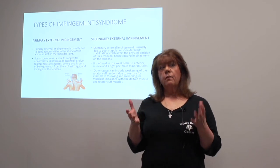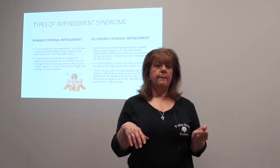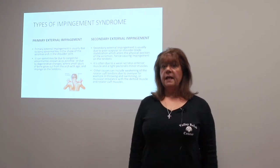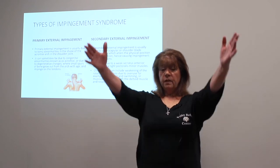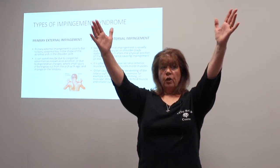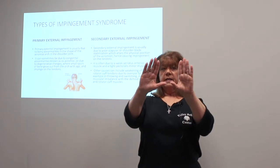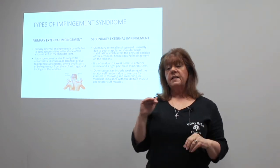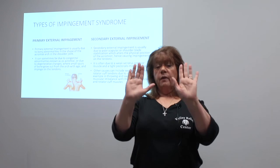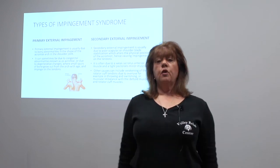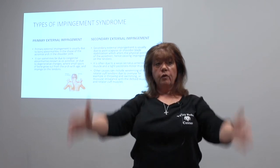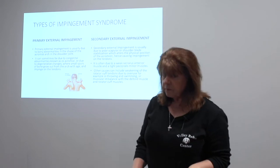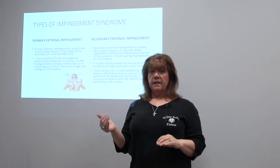One way to determine if someone has a secondary external impingement — and this is a self-test you can do at home — is to stand and raise your arms up to about shoulder level and have someone look at your back. If your shoulder blades kind of stick out or wing out away from your rib cage, then you have a weak serratus anterior, because that muscle should keep the shoulder blade down against those ribs so you can come through a full arc of motion.